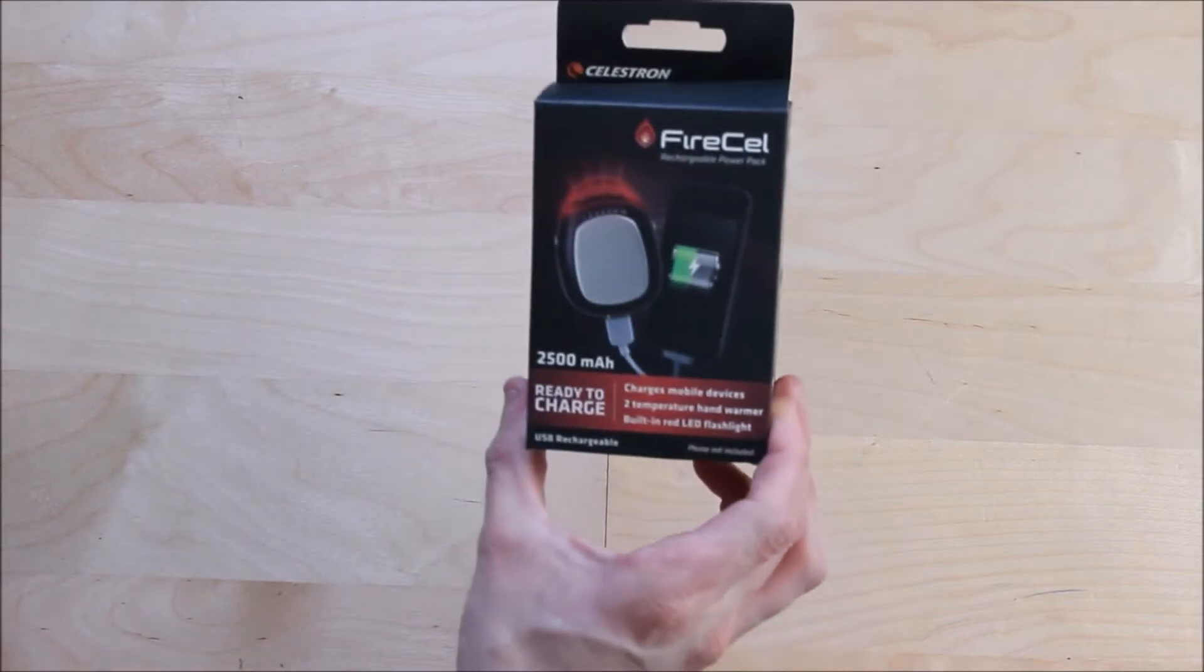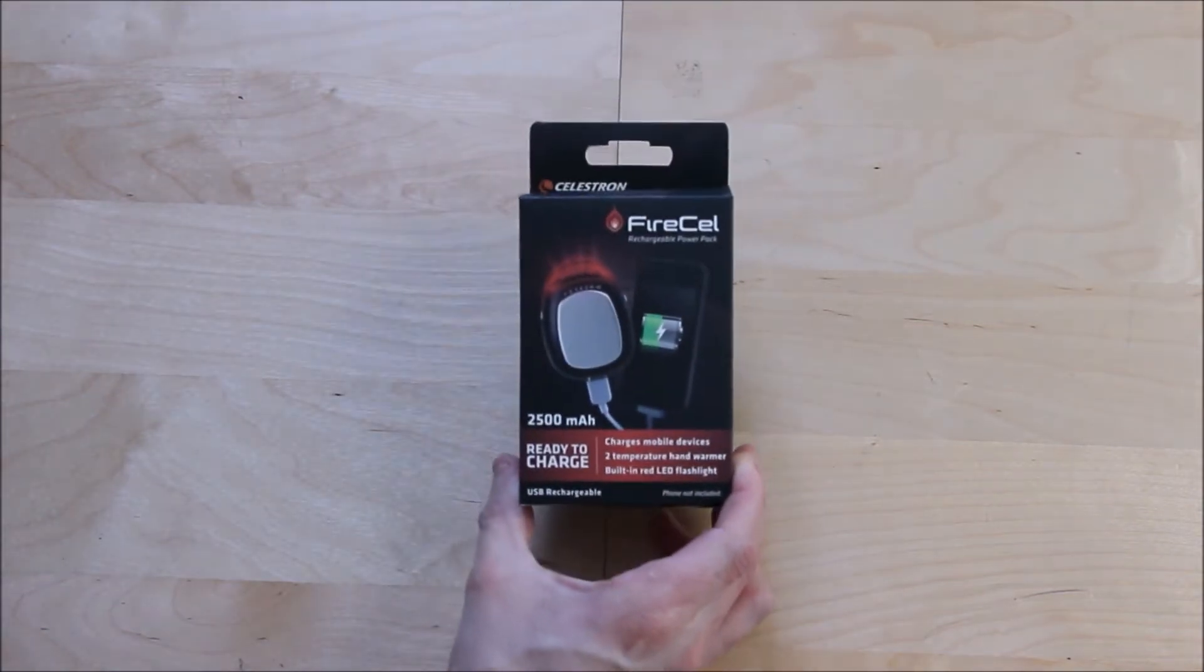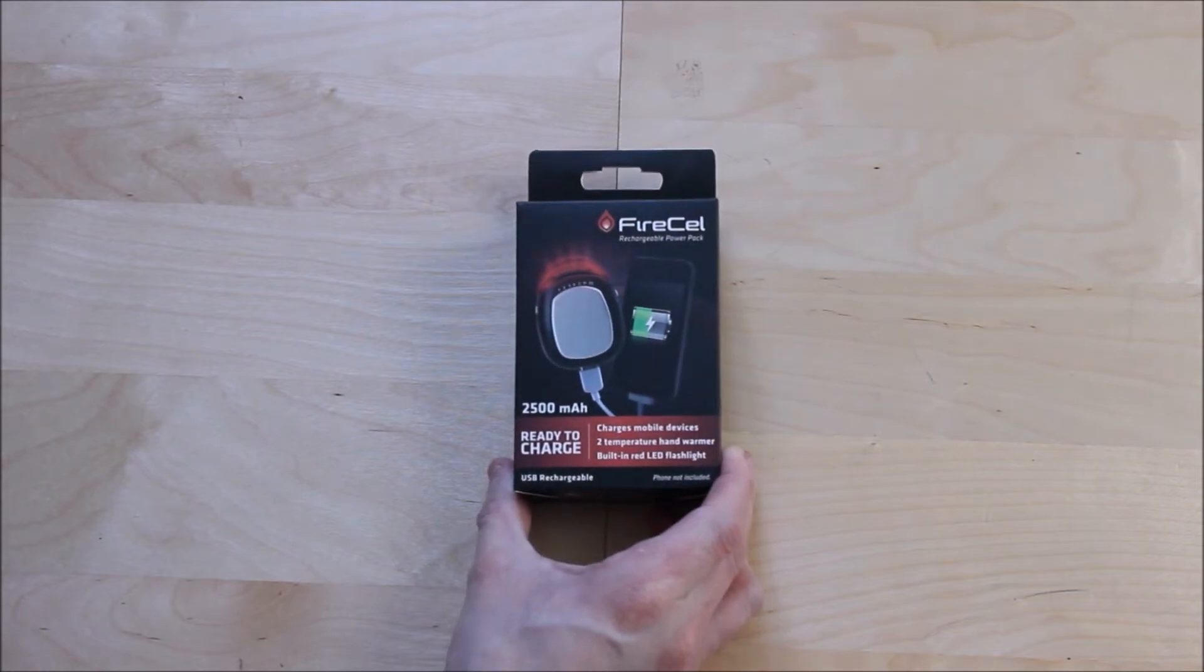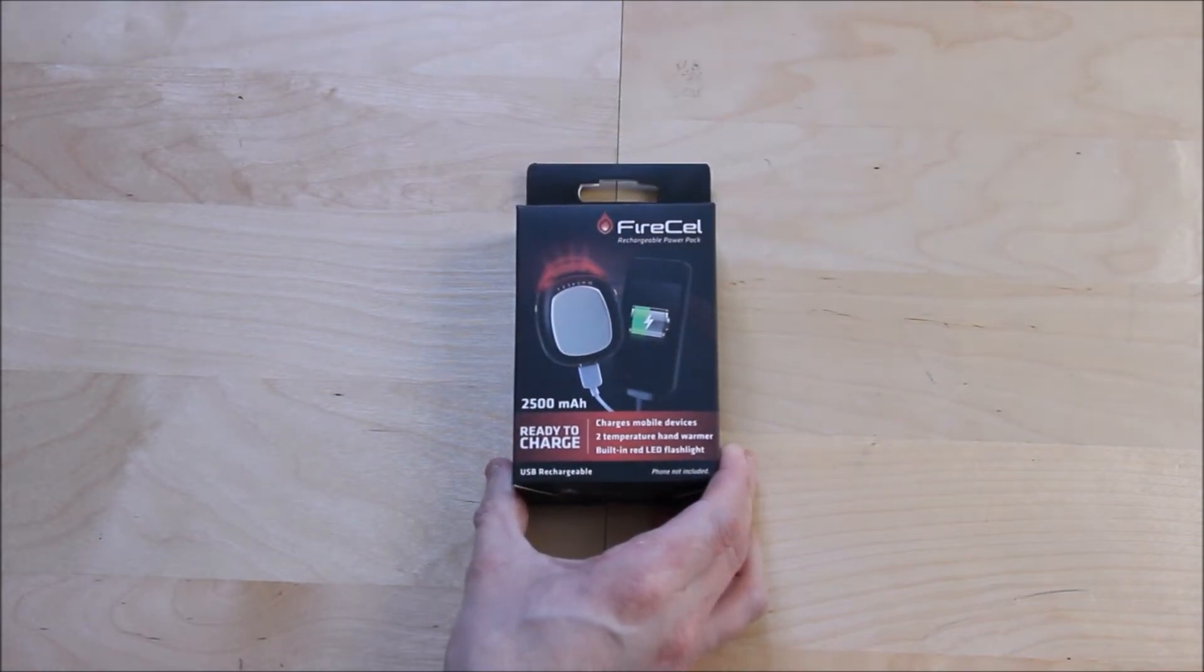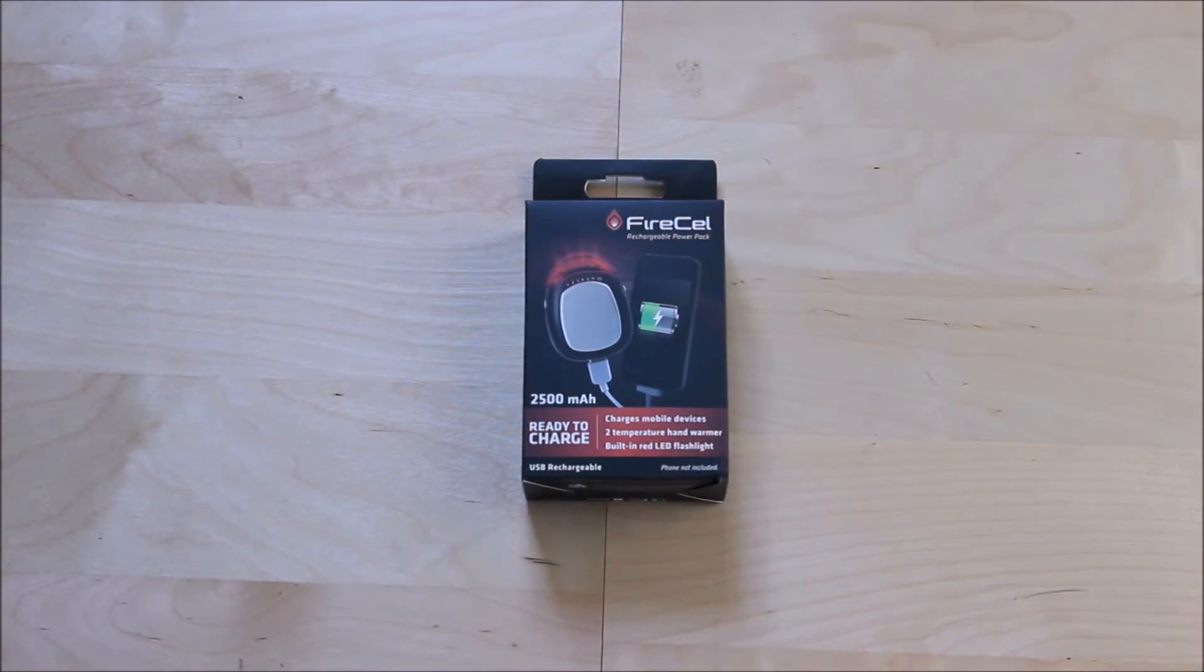Here we have the fire cell box. It's designed by Celestron. And basically what this cool device does, it is a red torch, a red LED torch. The reason why we use a red LED torch is to save our night vision whilst you're using your telescope and equipment for astronomy.